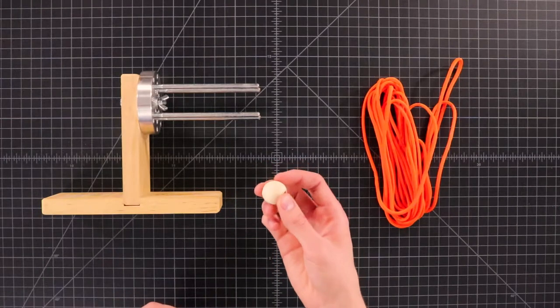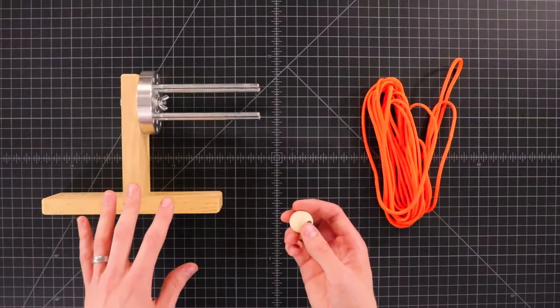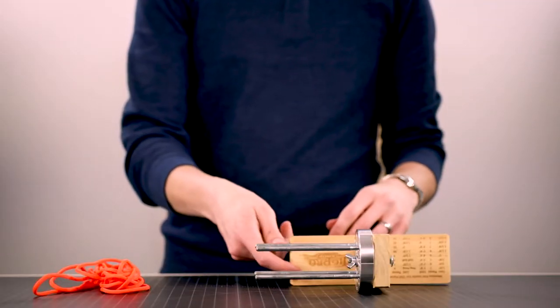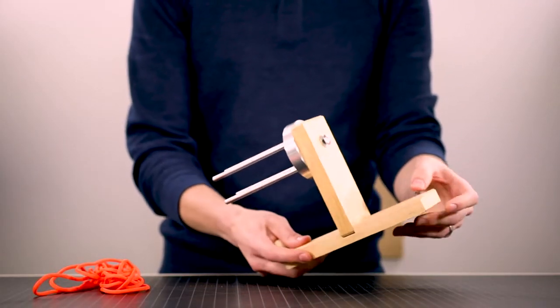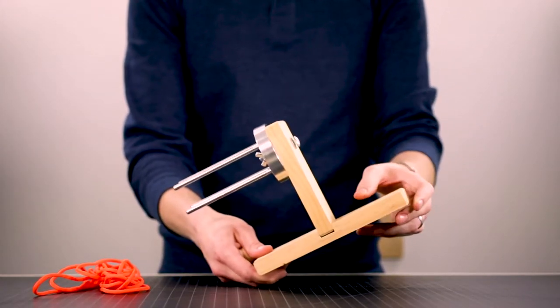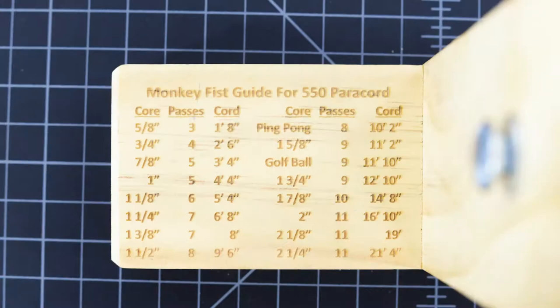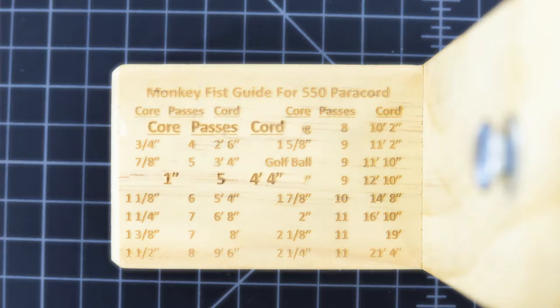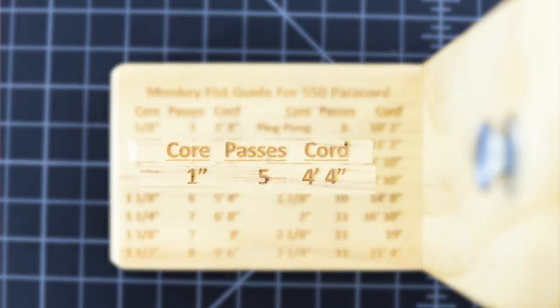This one is an inch, and so on the jig, if you happen to purchase one of those, the plate of this one is really handy. It gives you the details of how to make a monkey fist for any size of center, any size of core. You'll see on here for the one inch we're going to be making five passes around. And for cord we're going to need about, like I said, four foot four inches. So five feet should do us. Let's dive right in.